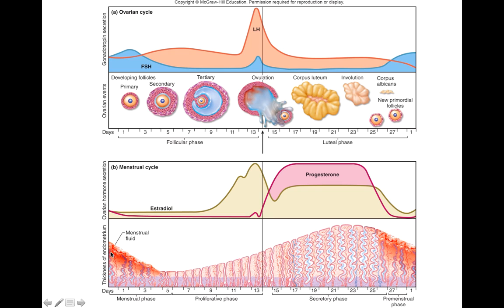During growth of the follicles, the menstrual phase occurs, and then you start proliferating. The blue line at the bottom is the stratum basalis — the basal layer of the endometrium — which is always there. The lining that sloughs off is the stratum functionalis, or functional layer, which grows and grows and then is sloughed off. You always have the stratum basalis; you grow and slough off the stratum functionalis every month.